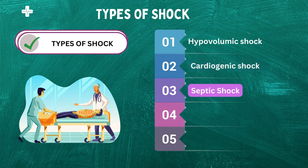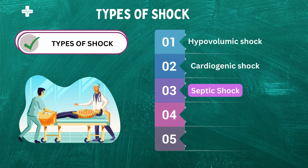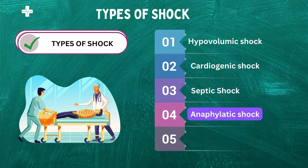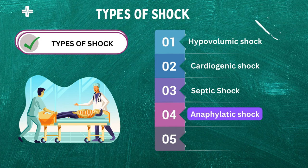Third, septic shock. This type of shock occurs when the body's immune system overreacts to an infection, leading to inflammation throughout the body. This inflammation can cause damage to the body's organs and tissues, leading to shock. Next, anaphylactic shock. This type of shock occurs when the body has an extreme allergic reaction to a substance, such as a medication or food. The immune system releases chemicals that cause blood vessels to dilate, leading to a decrease in blood pressure and inadequate blood flow to the body's organs and tissues.